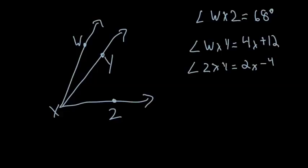Alright, so now we're given the angle WXZ, which is cut in two parts by the ray of XY. The whole thing is 68 degrees. The WXY part is 4X plus 12, and the ZXY part is 2X minus 4. Now this is obviously not drawn to scale, and you'll see this in a minute. We need to find out what each angle measures.